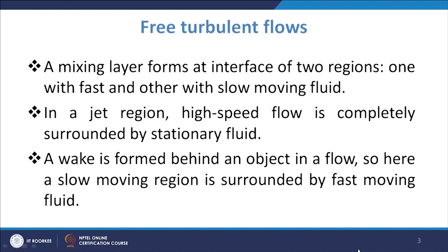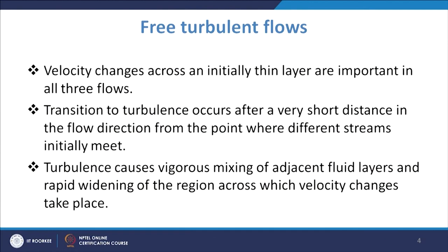These are some examples, and we will discuss how the velocity profile and the calculation of stresses are handled. In these cases, velocity changes take place in an initial thin layer, which becomes very important in all three flows. The transition to turbulence occurs after a very short distance in the flow direction from the point where different streams initially meet. Turbulence causes vigorous mixing of adjacent fluid layers and rapid widening of the region across which velocity changes take place.